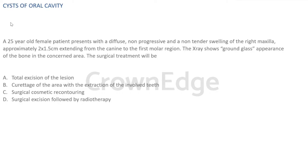A 25-year-old female patient presents with a diffuse, non-progressive, and non-tender swelling of the right maxilla, approximately 2 by 1.5 centimeters, extending from the canine to the first molar region. The X-ray shows ground glass appearance of the bone in the concerned area. What would be the surgical treatment?